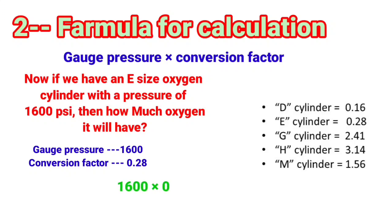gauge pressure, which are 1600, multiply by conversion factor, which are 0.28. After the multiplication, it gives us the answer of 448 liters. Simply, it means if we have an E-size oxygen cylinder with a pressure of 1600 psi, it will give us 448 liters of oxygen.